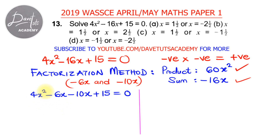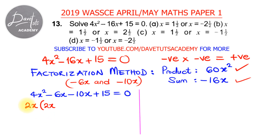Now we collect like terms. Looking at 4x squared minus 6x, x is common to both, and additionally 2 can divide both 4 and 6. So 2x is the common factor of the first two terms. Taking 2x out of 4x squared leaves 2x, and minus 6x divided by 2x gives minus 3.